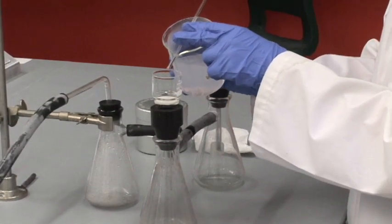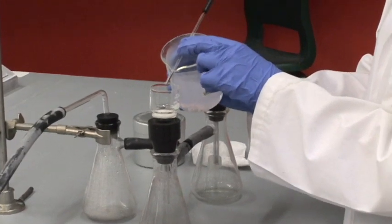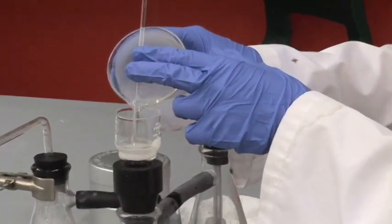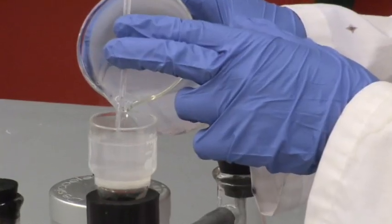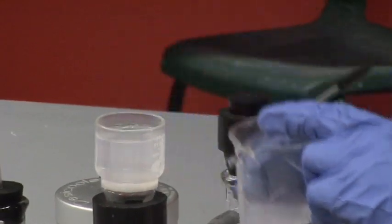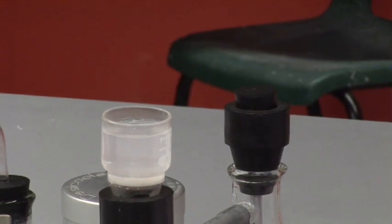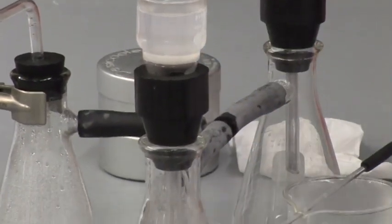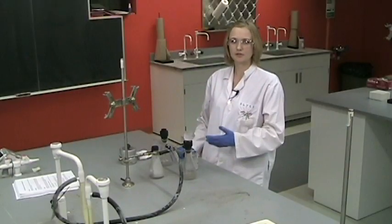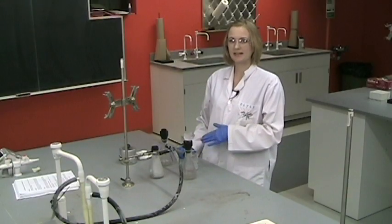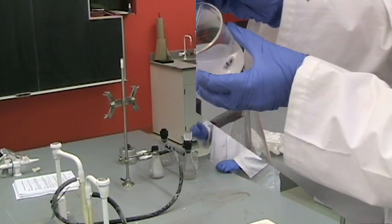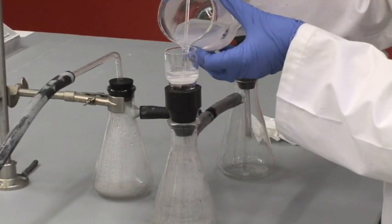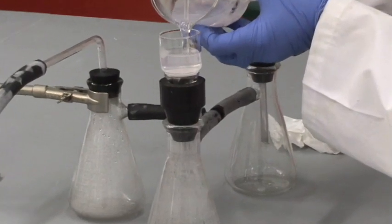In order to decant, you will hold your glass stir rod across the mouth of the beaker like this and pour down the stir rod into the crucible. The stir rod will help prevent the bulk of the precipitate from going onto the crucible and will then allow us to rinse the precipitate in the beaker when we're done. So you will continue to decant until all of the supernatant liquid has been filtered.